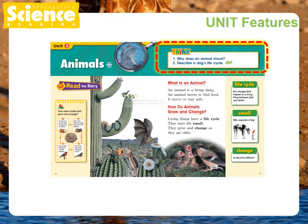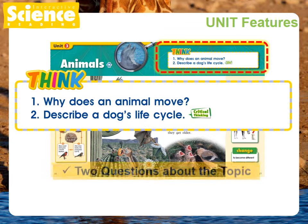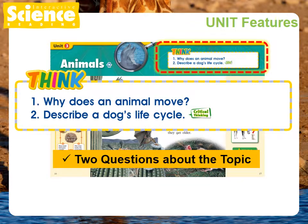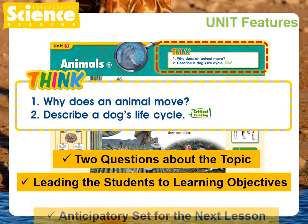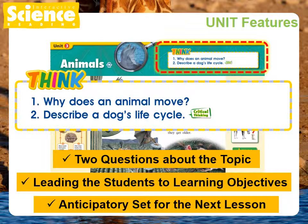Let's look closely into the unit. The Think section consists of two questions asking about the main topic of the unit. Students are encouraged to answer the questions at the end of the class. Teachers may use this section as a way of leading students to the learning objectives of the unit, or as an anticipatory set for the next lesson.